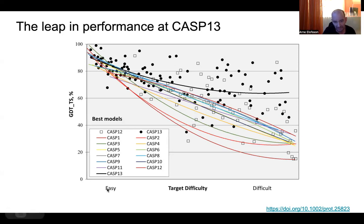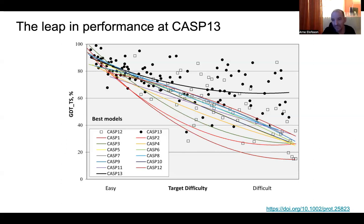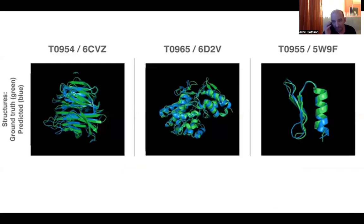Looking at the CASP history: for easy targets, good predictions existed since CASP1 in 1994. For difficult targets, performance was near random early on, improved slightly in the first few CASPs, but then plateaued from CASP4 through CASP12 with very marginal improvement. Then suddenly there was a jump in CASP13, from an average of about 40 to about 60 GDT-TS for hard targets — and you can see the predicted structures shown in blue are quite similar to the native structures in green.